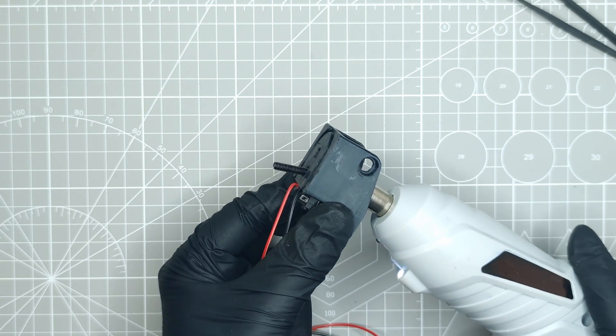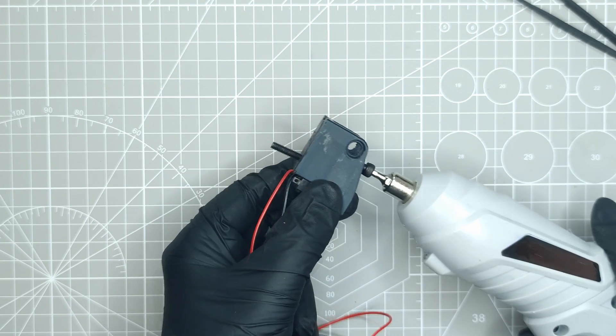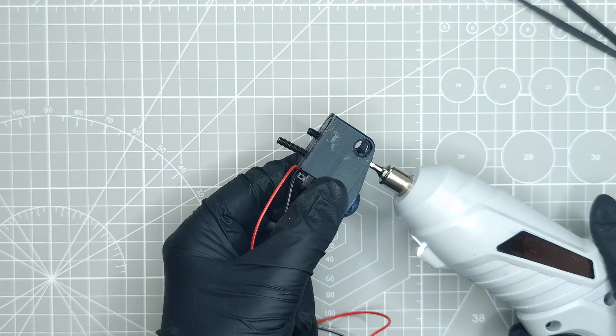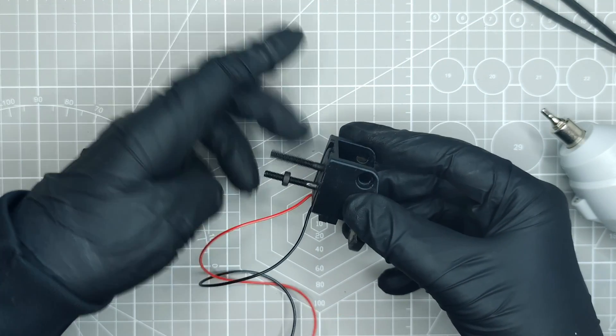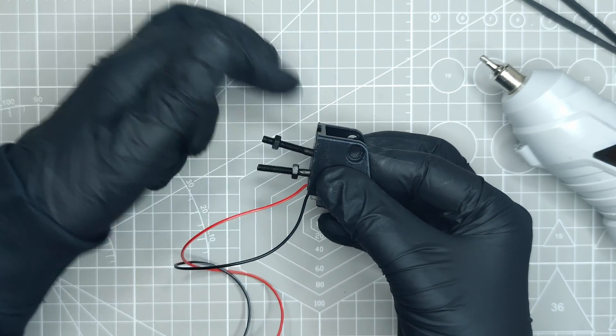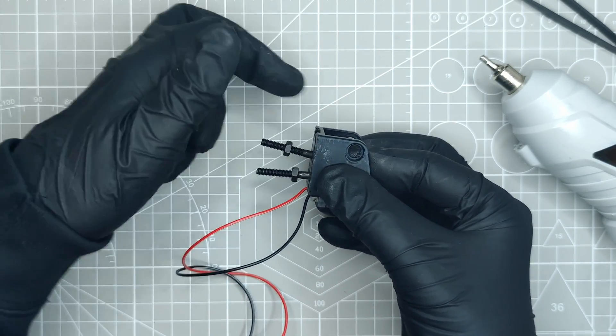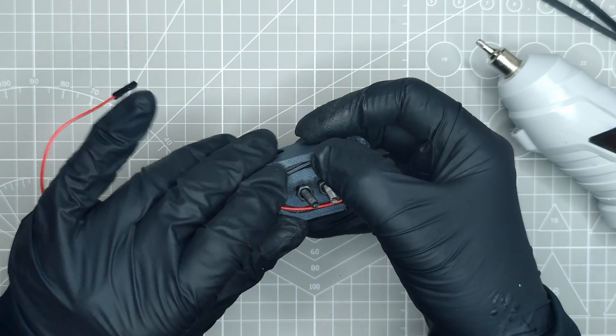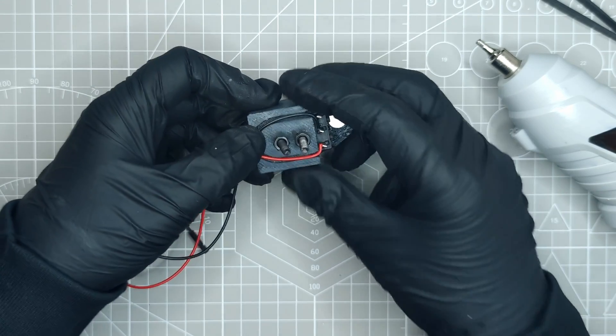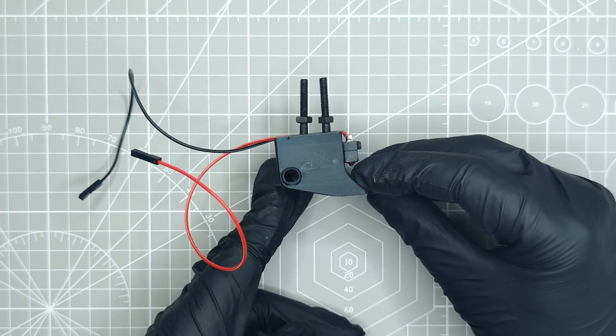In this step, I will install the two M4 bolts and nuts that will be used to secure the shifter to the wheel. I first screw the two bolts inside the base, then I screw the nuts at the back temporarily. Because we have checked everything for clearance before, the installation is very quick. I can now tuck the two wires in the wire channels. Everything is nice and flush with the base.